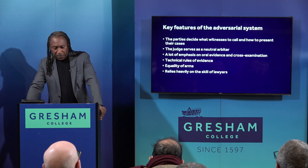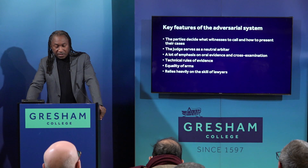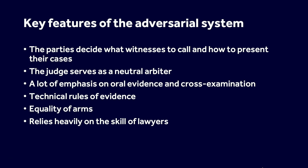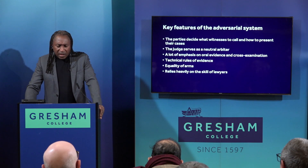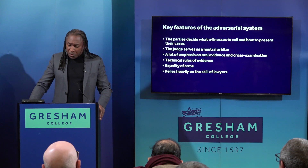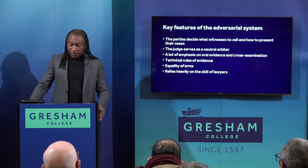We can identify certain key features which characterise the English adversarial system of justice. Firstly, as we've just heard from Lord Denning, it's for the parties to decide which witnesses they call and how to present their cases. The judge is meant to be a neutral arbiter. Although judges can and do intervene and ask questions of witnesses, it's considered inappropriate for a judge to intervene too much and assume the role of an advocate. Second, a lot of emphasis is traditionally placed on oral evidence. Parties who rely on witnesses are generally expected to call them to give oral evidence in court. Third, opposing counsel has the right to cross-examine the witness. Cross-examination by a skilled advocate is seen as both an opportunity for the witness to answer criticisms and as a vital tool in getting at the truth.